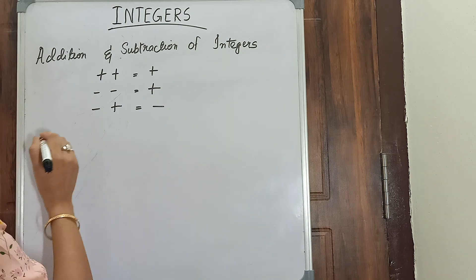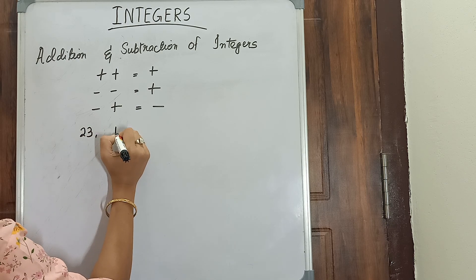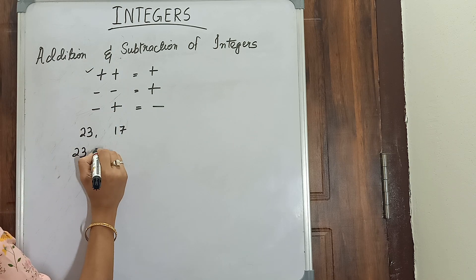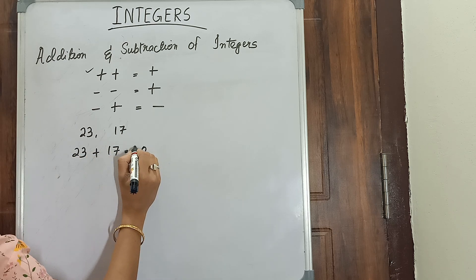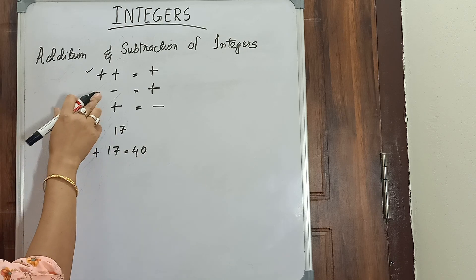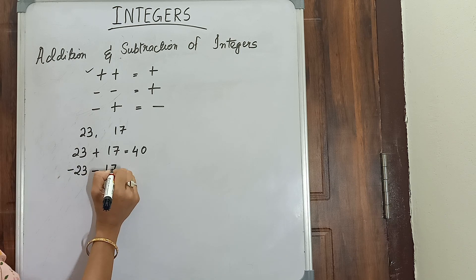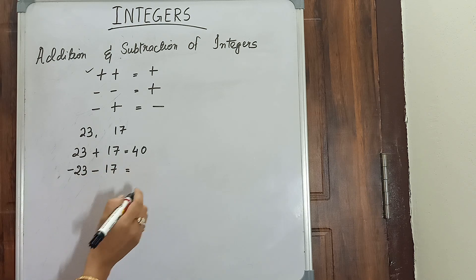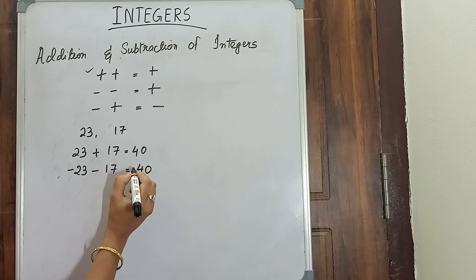We will apply this with numbers. Let us take 23 and 17. For plus and plus: 23 plus 17 equals 40, because plus and plus is always plus. For minus and minus: minus 23 minus 17 — since both signs are the same, we do 23 plus 17 which is 40, and we put the sign of the bigger number — which is minus — giving us minus 40.